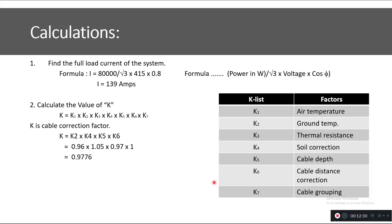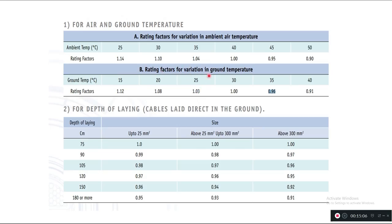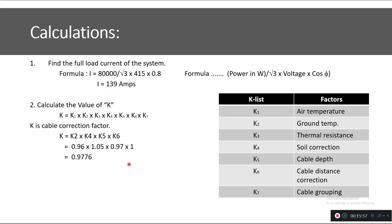To get the values of K2, K4, and K5, I refer to the cable manufacturer's datasheet. For a ground temperature of 35°C, the rating factor K2 is 0.96. For a laying depth of 1 meter (approximately 105 cm in the chart), K5 is 0.97. For damp soil, the soil correction factor K4 is 1.05. Multiplying these together gives an overall correction factor K of 0.9776.